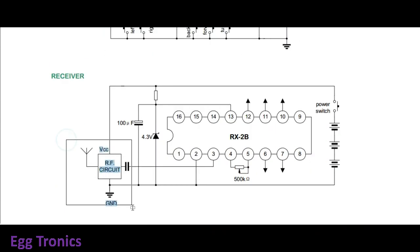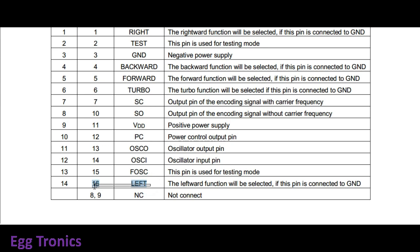The receiver decodes to know which among the 5 keys was pressed: forward, backward, left, right or turbo.